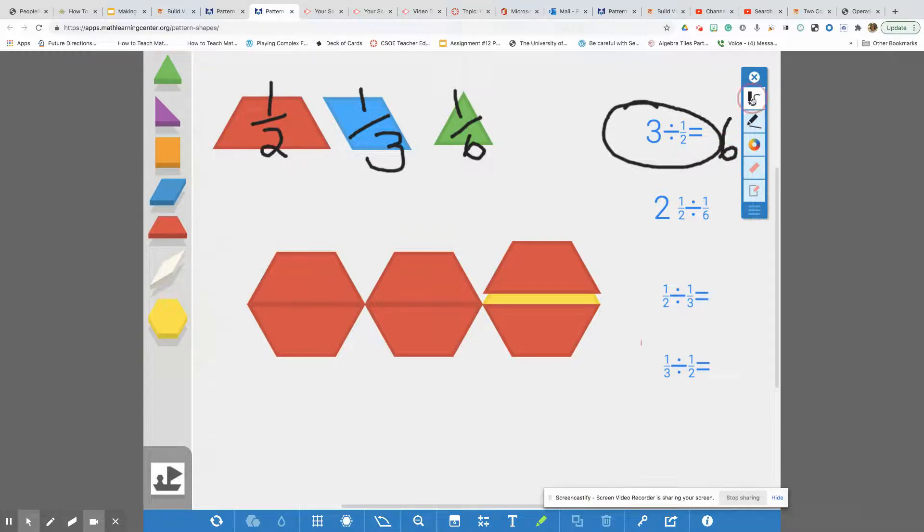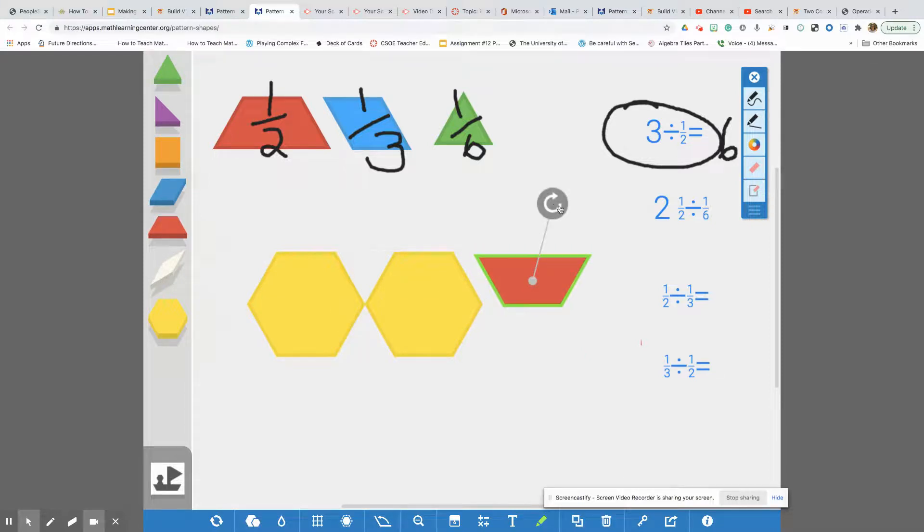Let's try another problem. This time we're going to start with two and a half. So first I will build two and a half. Now our problem is how many sixths can fit into two and a half. Remember our sixths are these green triangles. So I can fit one, two, three. I can fit three in one half.